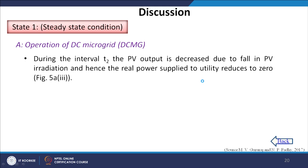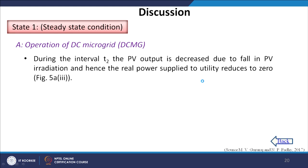During interval T2, the PV output decreases due to a fall in PV radiation, and hence the real power supply to the utility reduces to zero. During interval T3, there is a switching of additional DC load within the DC microgrid, and the deficit power is supplied by the utility grid. Despite all the switching dynamics, the controllers of various converters of the DC microgrid perform satisfactorily, and the DC grid voltage is regulated at 1200 V during all modes.